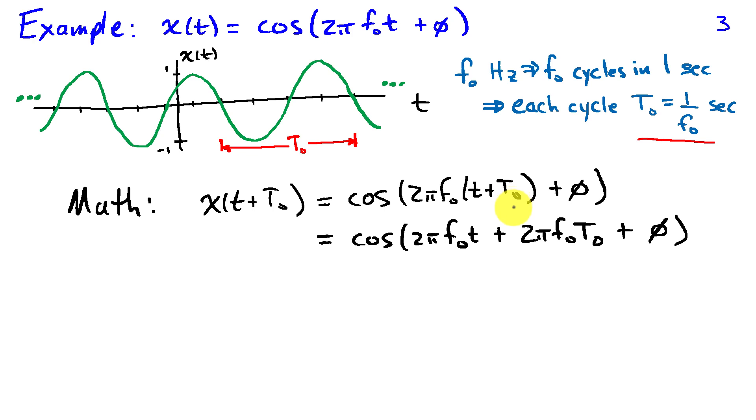I substitute for t in the right hand side of the expression for x of t and I'll distribute this multiplication over the sum inside the parentheses to write cosine 2 pi f naught t, which is what I had originally, plus 2 pi f naught t naught plus phi. So this t naught is some constant that we are going to determine in a moment and f naught is some constant.